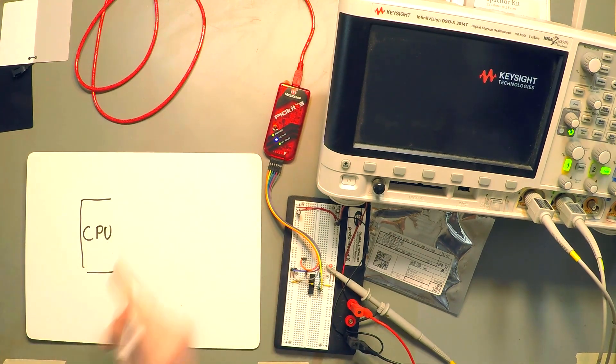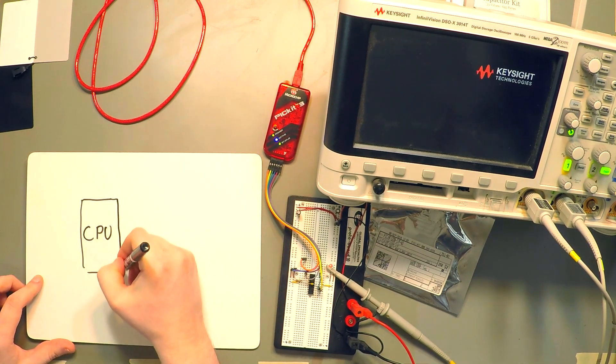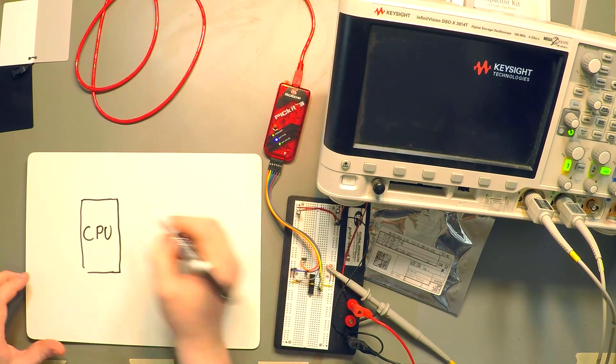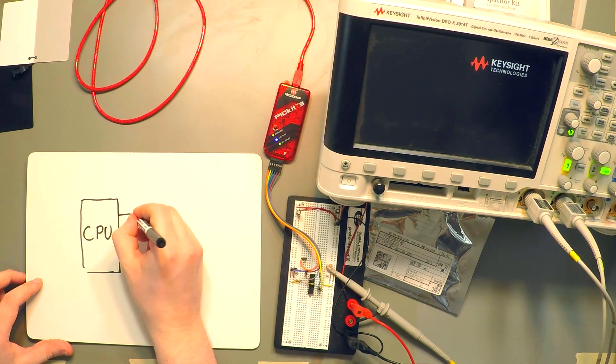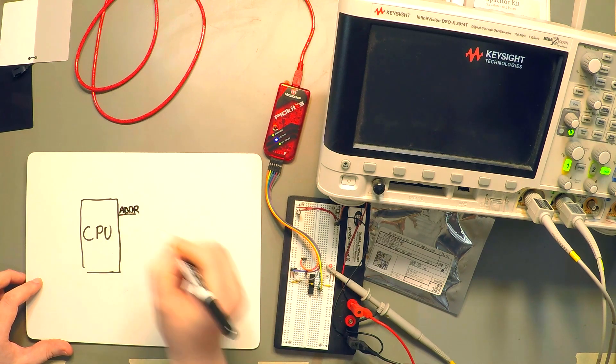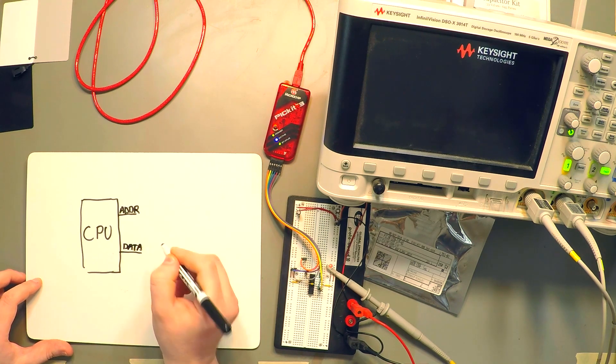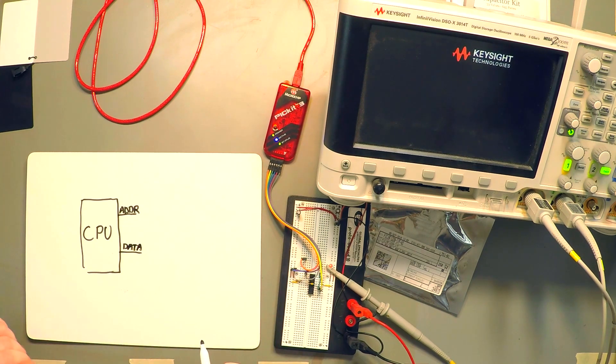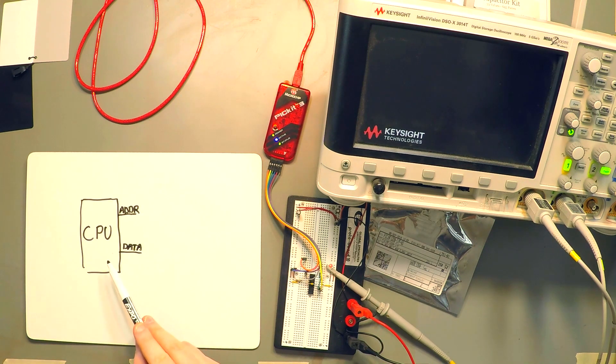And what we're going to do is we're going to combine the individual signals into bus lines. So here we're going to have an address bus. And then here we're going to have a data bus which will also carry the control signals. Now the purpose of the CPU is to execute instructions. On its own it's pretty much useless.